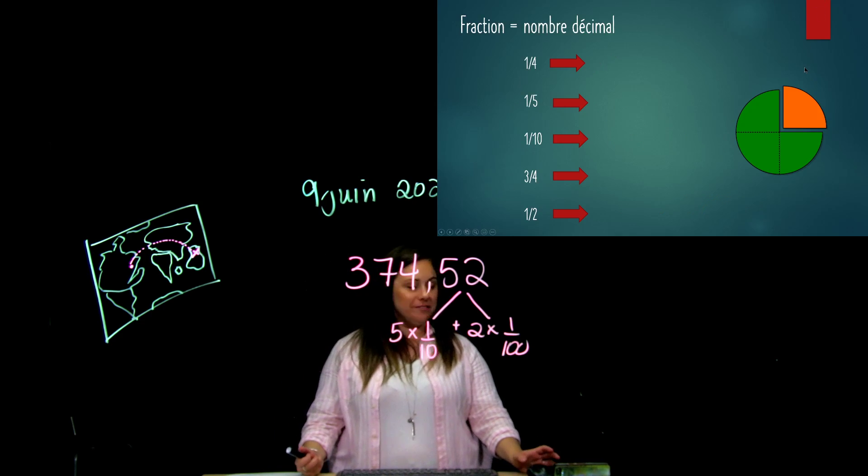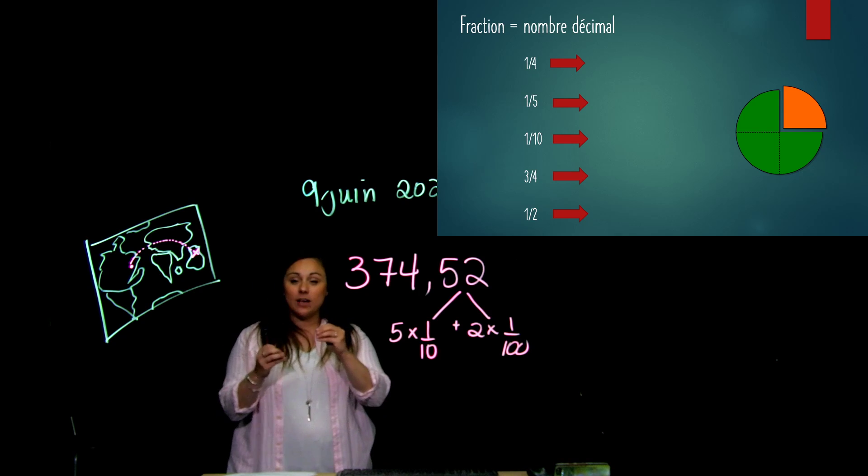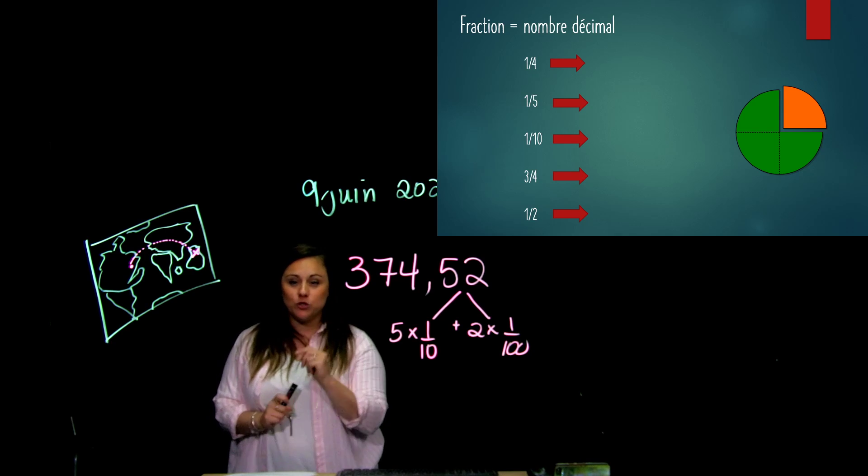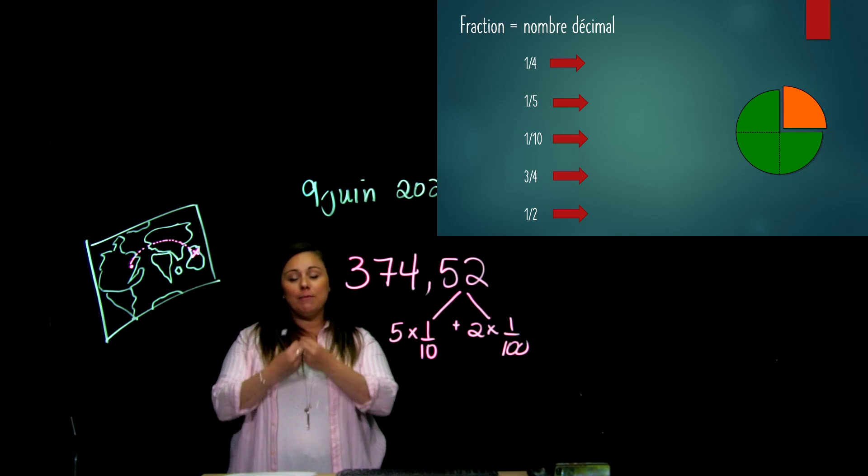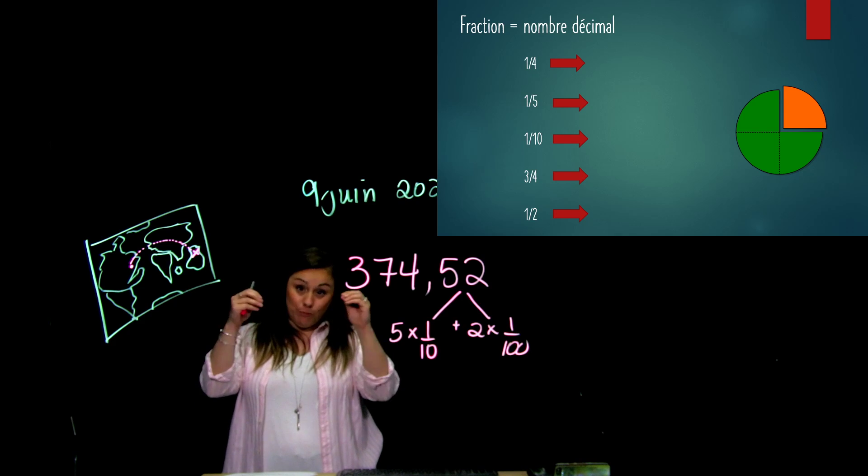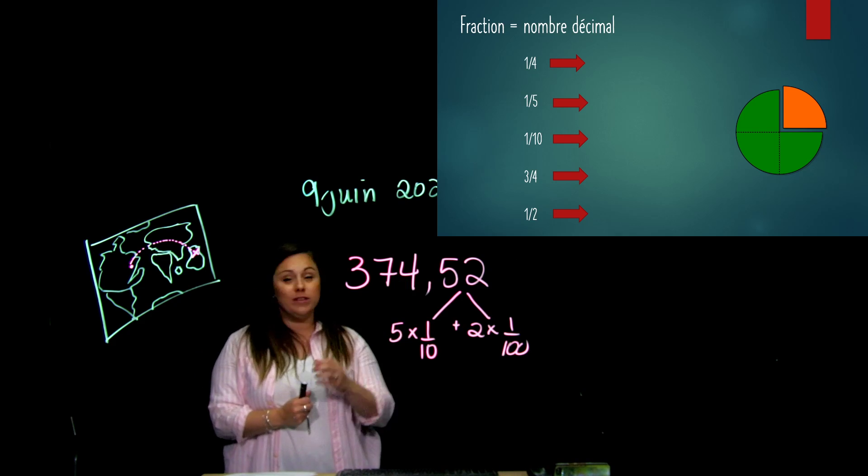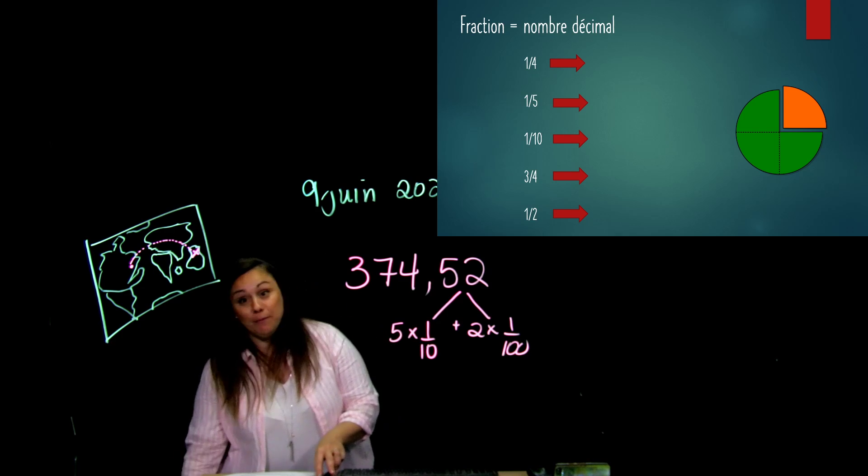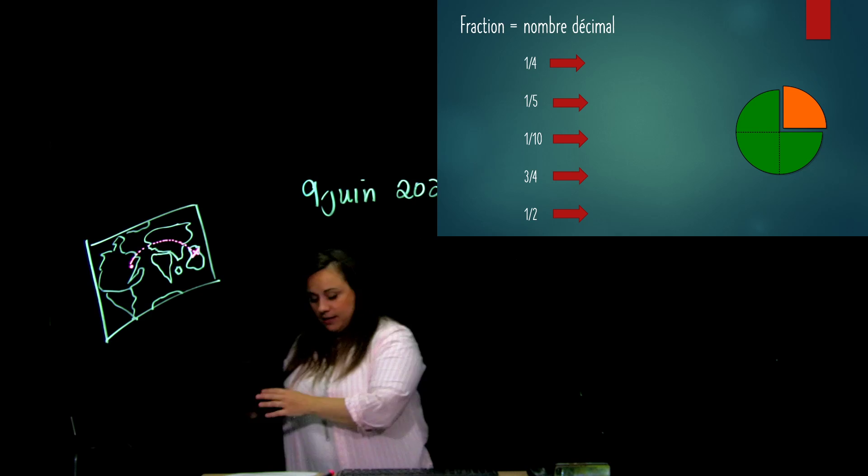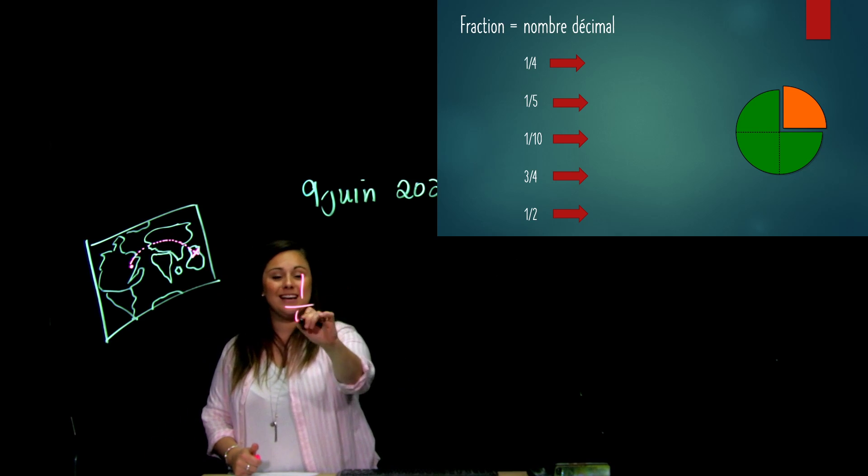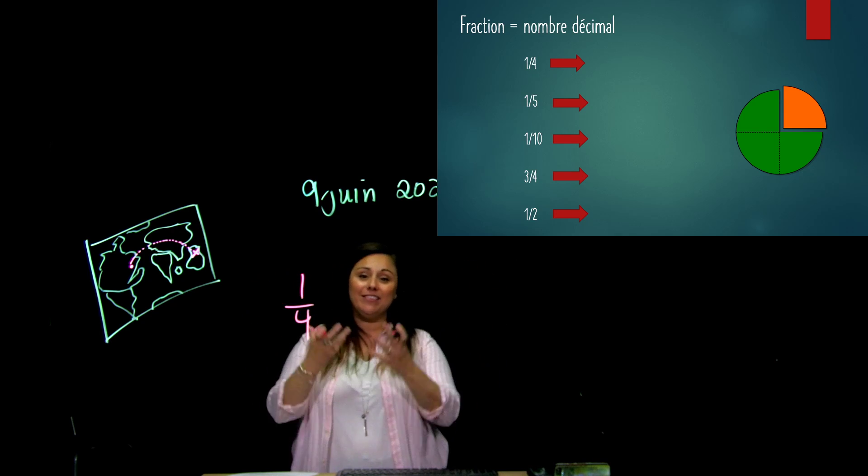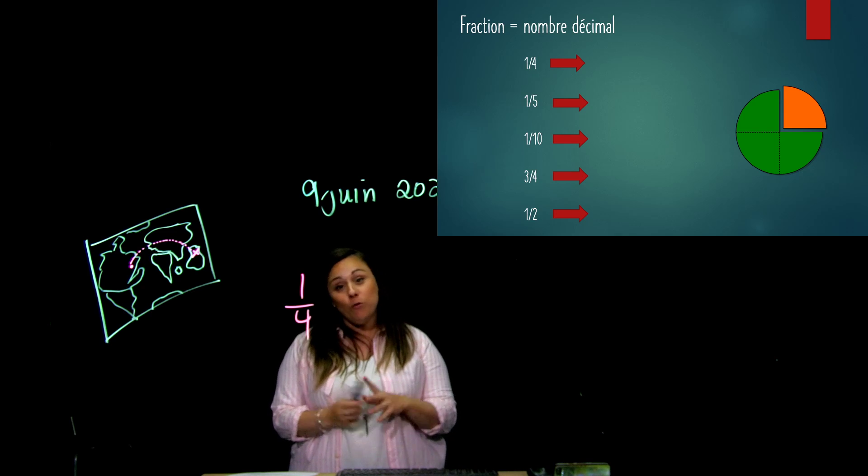Maintenant, allons voir l'exemple suivant. Là, où est-ce que ça se complique? C'est quand on a des fractions qui ne sont pas sur 10, où le dénominateur n'est pas sur 10. Je t'en ai déjà fait mention où je te disais qu'il y avait des fractions qui étaient vraiment plus efficaces que tu les apprennes par cœur en nombre décimal. Parce que sinon, ça te demande de dessiner 100 petites parties et les diviser selon le dénominateur. Vaut mieux les apprendre par cœur.